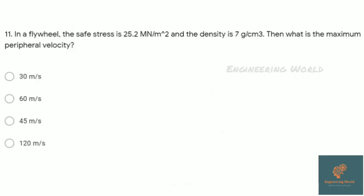By putting values, we get the answer as 5. Next question: in a flywheel, the hoop stress is 25.2 MN/m² and density is 7 g/cm³. What is the maximum peripheral velocity? The hoop stress formula is σ = ρv², where ρ is the density and v is the maximum peripheral velocity. By putting the given values, we get the answer 60 m/s.